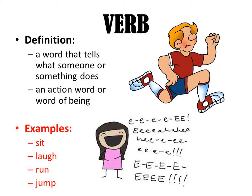So, what is a verb? A verb is a word that expresses an action or state in which a person or a thing is. It expresses the action and the state of a person or a thing. Action verbs are like sit, laugh, run, jump.